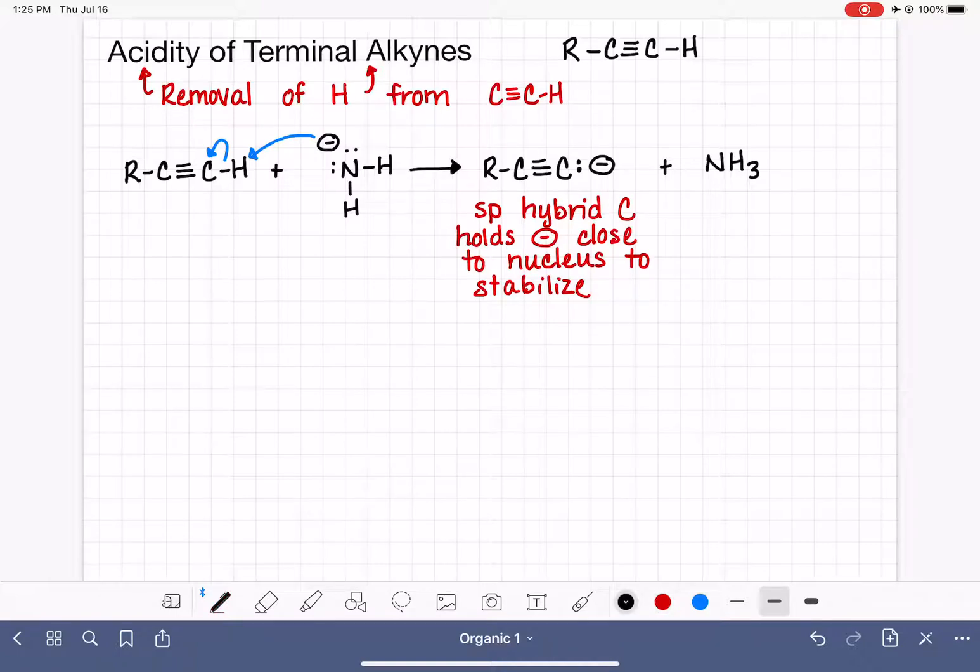If this reaction is done with the 2-carbon alkyne, this is ethyne. Let's use the NH2 minus ion again. So we're looking at the exact same reaction, just with a specific alkyne. We make this carbanion and also NH3.